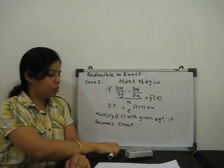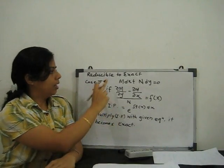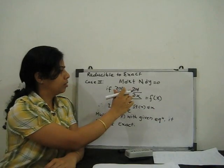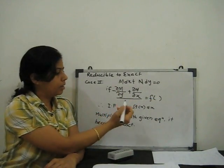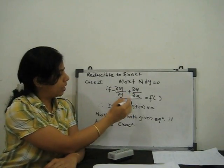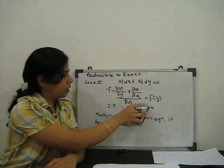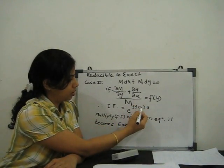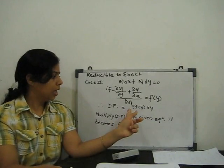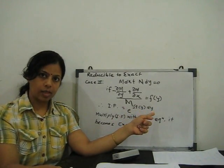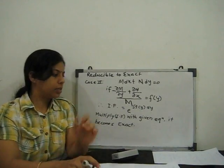Case 2: when (∂N/∂x - ∂M/∂y) divided by M gives a function of y only, then our integrating factor is e to the power ∫f(y) dy. Once the integrating factor is found, just multiply it with the given equation and our equation reduces to exact form. That is Case 2.